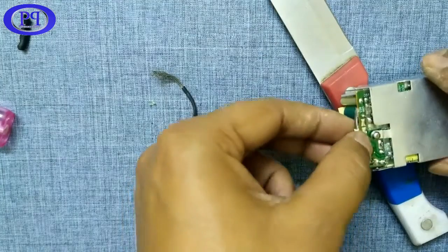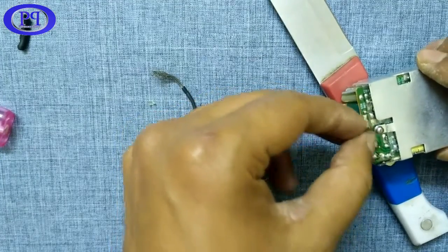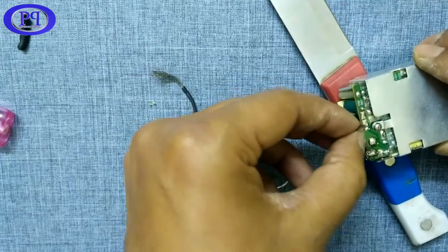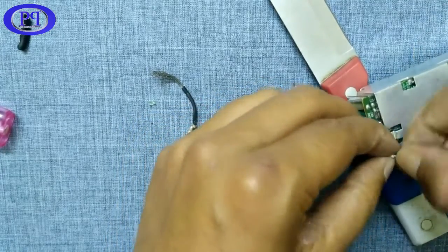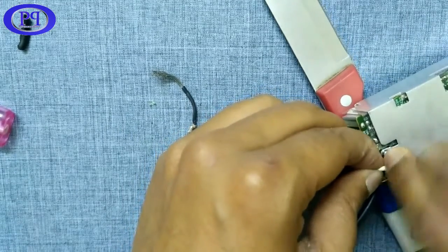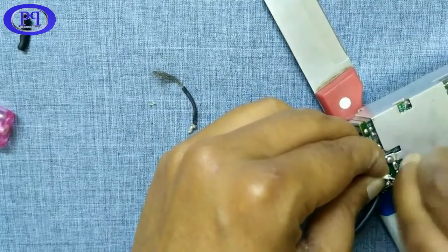Okay, now time to solder the positive terminal of the wire. So I am putting the wire on its preferred place to solder it up. First of all, I need to twist it up.